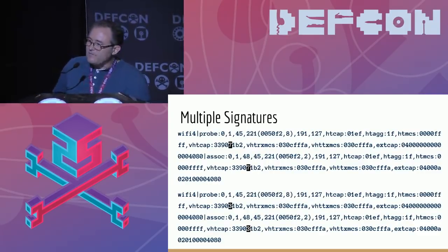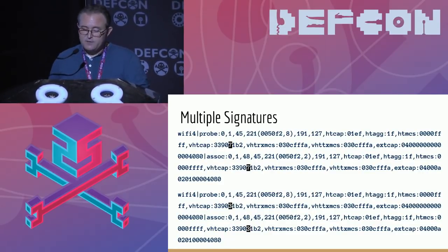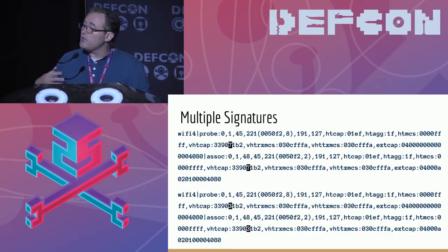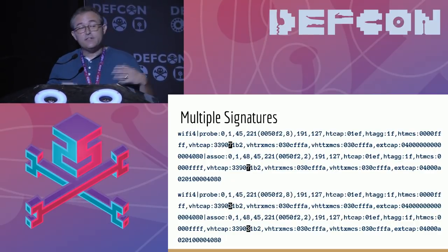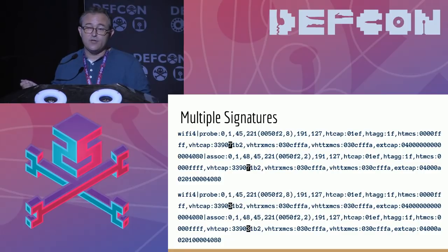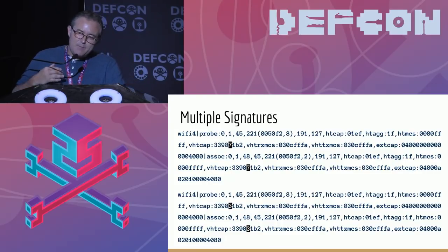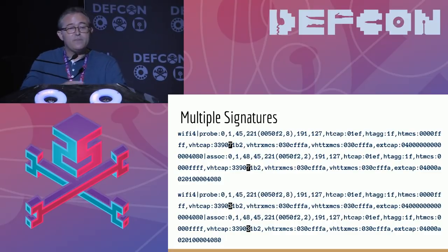Many devices have been seen to emit more than one signature, so there's more than one entry for them in the database. For devices which support both 2.4 and 5 GHz operation, the signatures are almost always distinct — there are information elements defined only for one band or the other, and .11ac is only defined for 5 GHz operation. So if the device supports both bands, we gather signatures from each. Even in the same band, devices often have multiple signatures — they vary what they advertise based on local conditions, like noise.